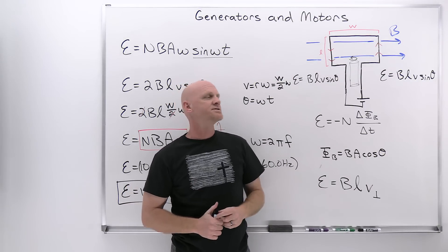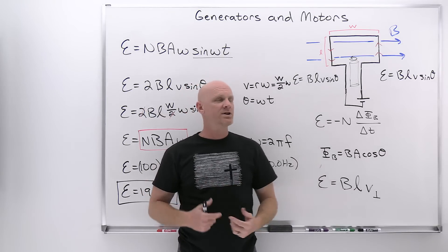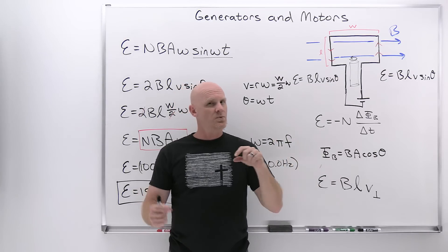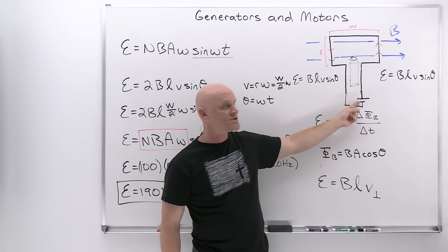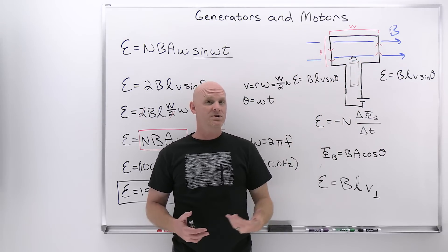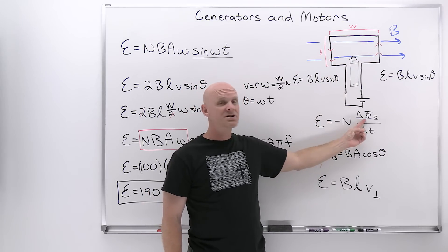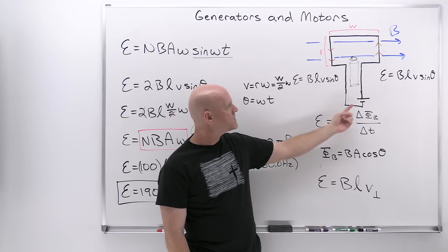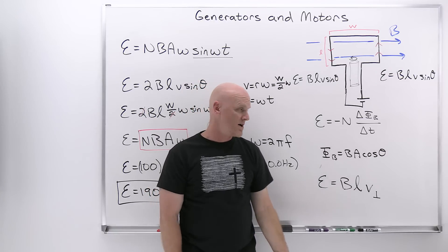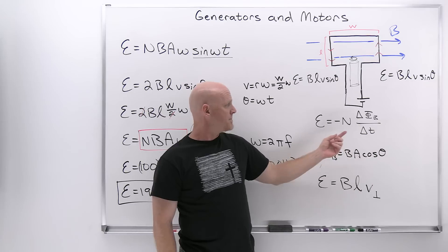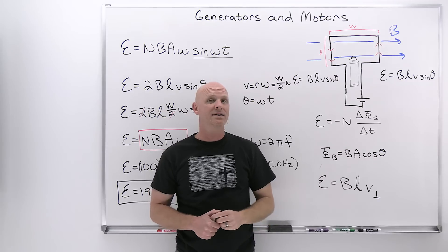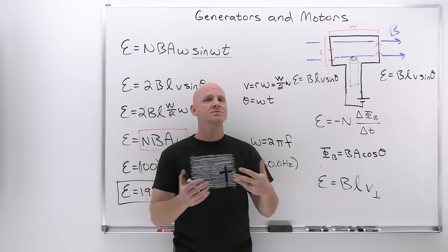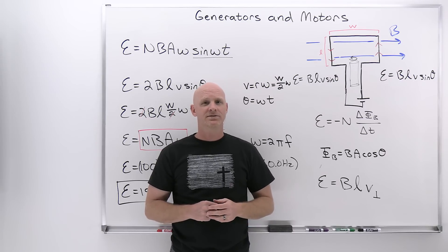There's one other issue to discuss: back EMF. When you have a spinning coil in a magnetic field, there's an induced EMF according to Faraday's law — that's the back EMF. So we have two EMFs: one associated with the battery or power source, and this back EMF, which is just an induced EMF because the coil is spinning and experiencing a changing magnetic flux as the angle changes. According to Lenz's law, the back EMF always opposes the EMF of your power source — that's why it's called a back EMF. The faster you spin the coil, the bigger the changing magnetic flux and the bigger this back EMF becomes. Motors simply convert electrical energy into mechanical work.